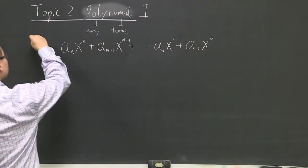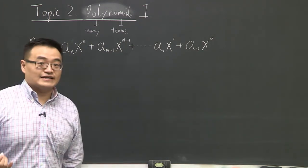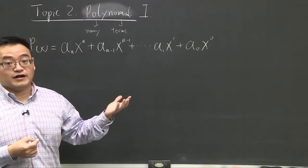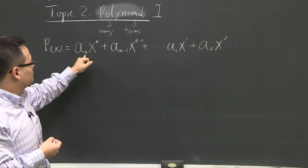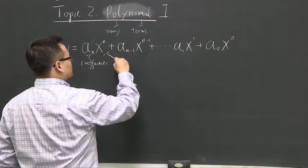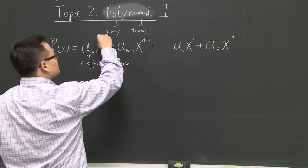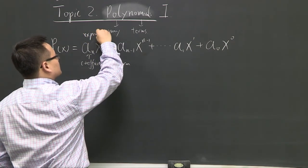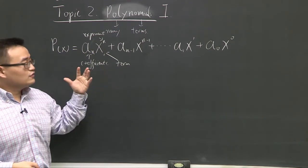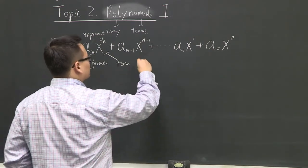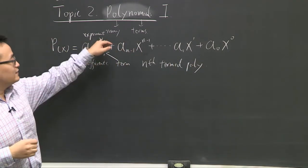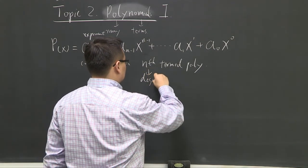This is a function of x — a polynomial of x — and this is the most general form of any polynomial. The a_n values are called coefficients, x is the term, and the exponent on top is the power or degree. This is a very generic way of writing a polynomial. In this nomenclature, it is called the nth degree polynomial, and n is the degree of the polynomial.